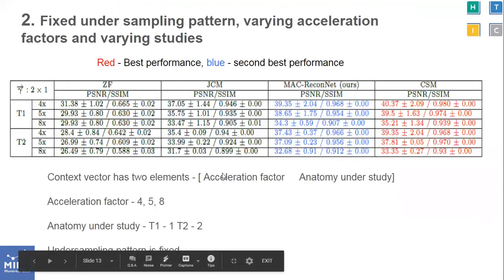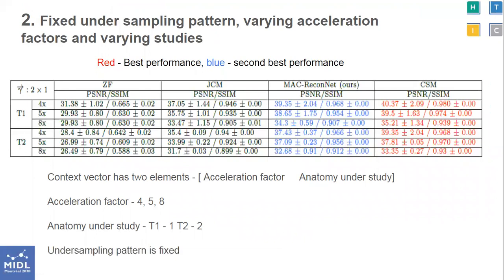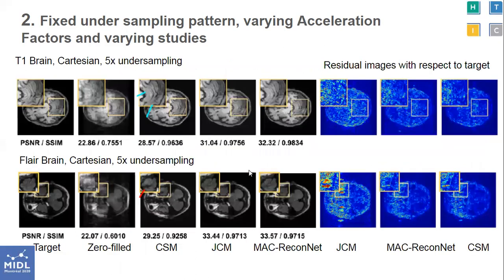In the second experiment, we fix the undersampling pattern and vary the acceleration factor and anatomy under study. This context demonstrates the flexibility of our model for scenarios like multi-contrast MRI, wherein multiple sequences such as T1, T2, proton density, and MRA of the same anatomy are acquired for diagnosis. We see that in this case also the metrics are closer to the CSM and much better than the JCM. In the qualitative analysis, we see improvements in highlighted regions and regions marked with arrows, showing better recovery of structural details.